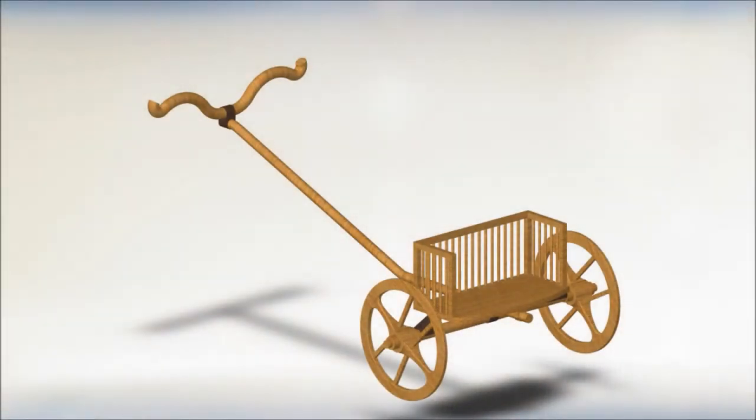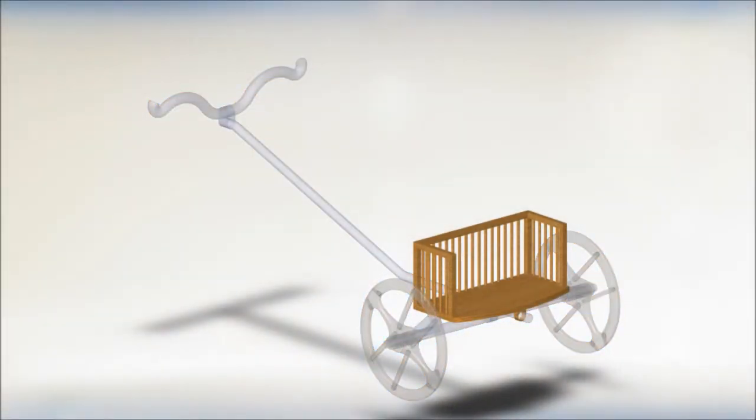War chariots had some common features. The cockpit had to accommodate the passengers. It was closed by light panels on the front and on the sides. The floor was usually realized by interwoven leather stripes, which should have an efficient shock absorbing effect.